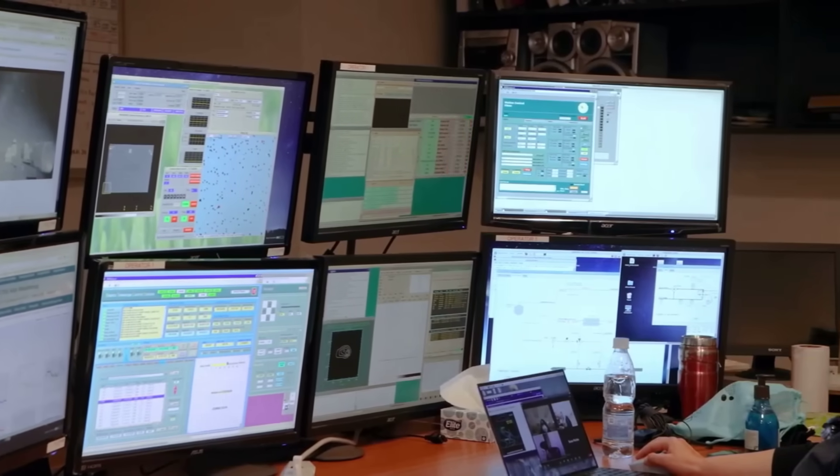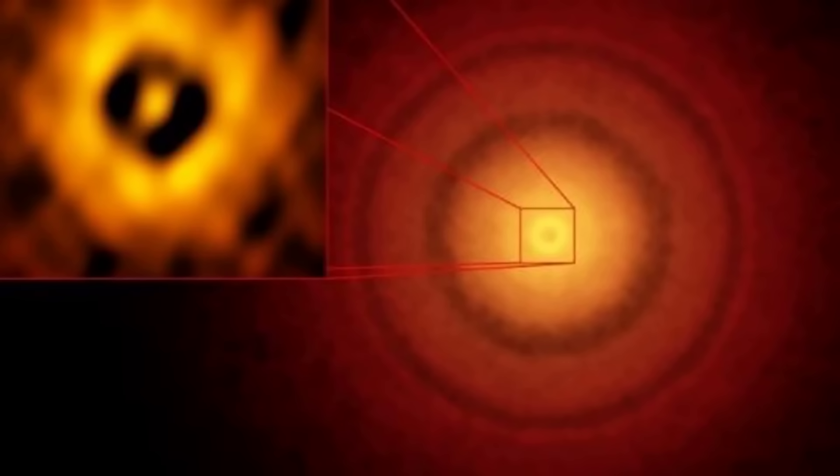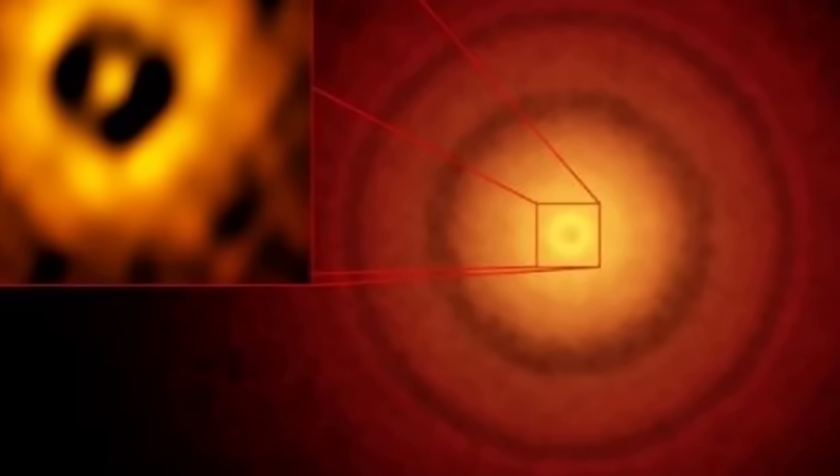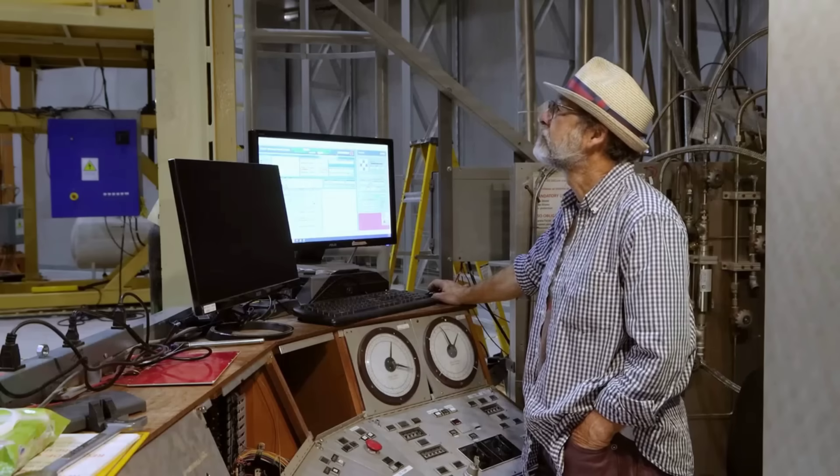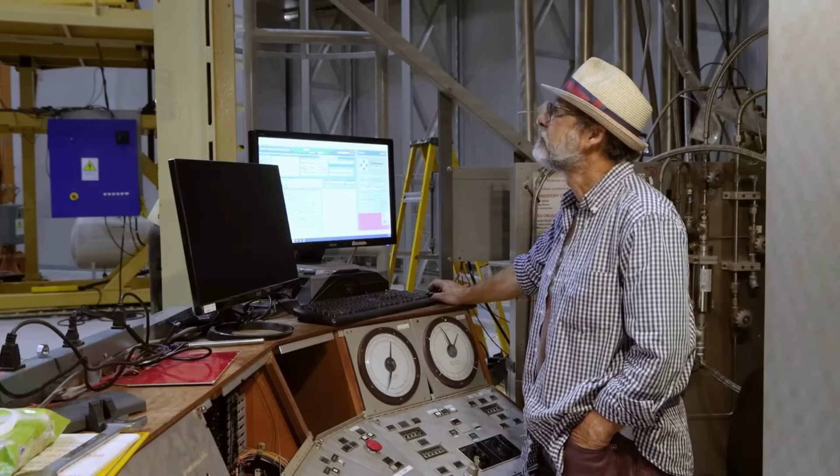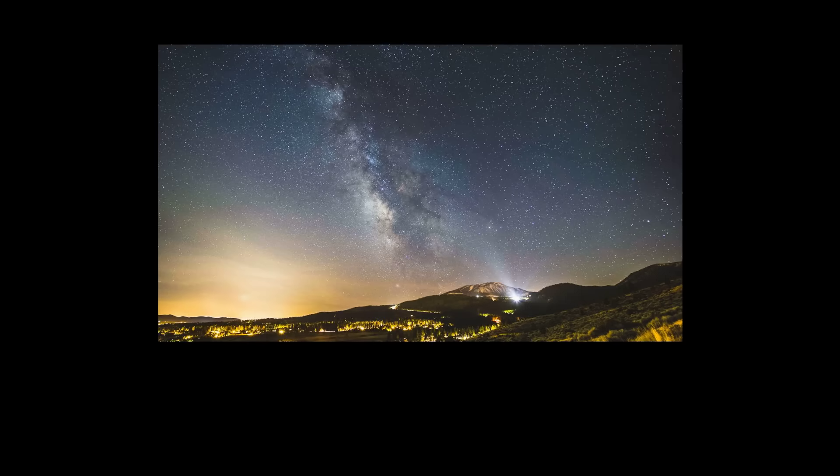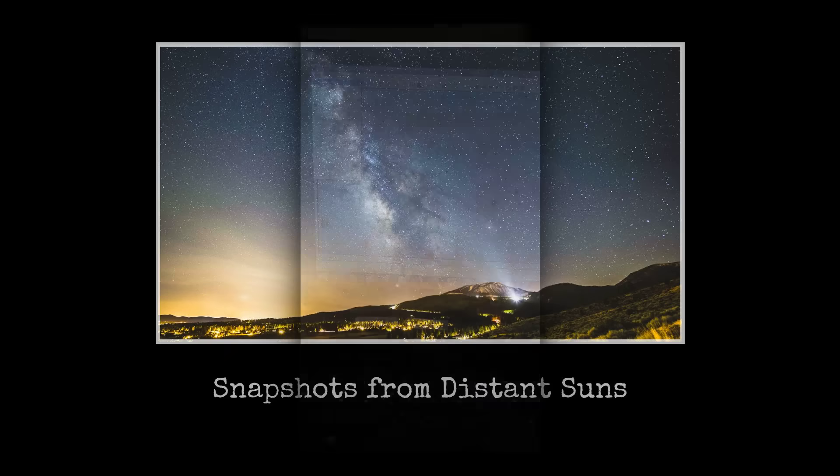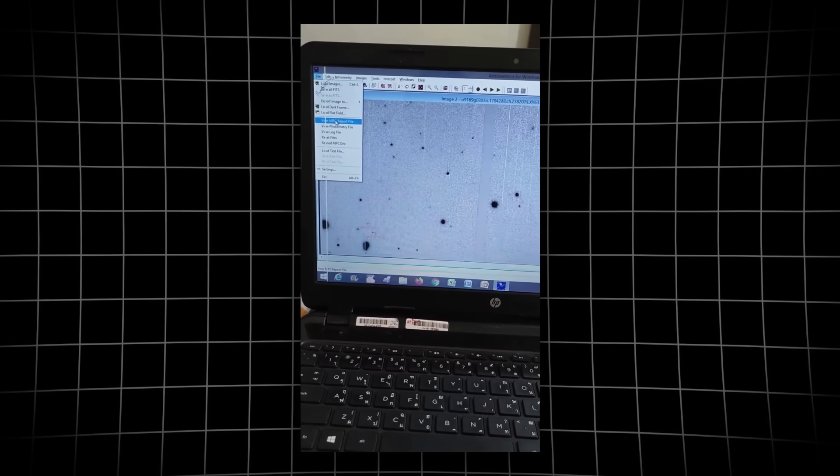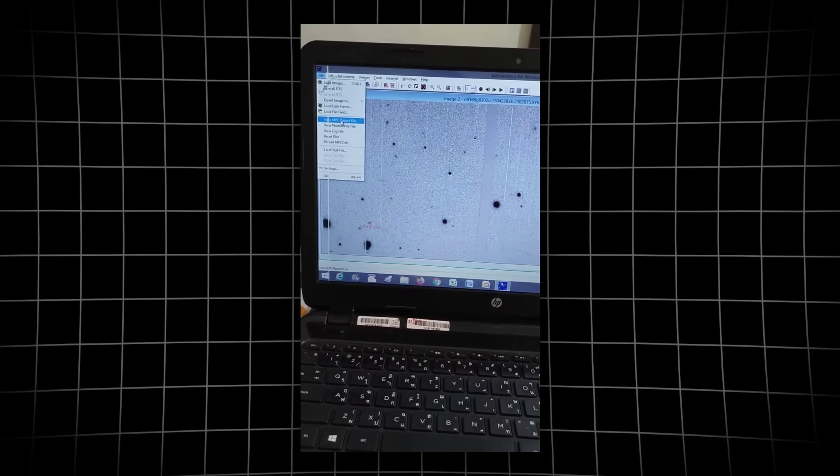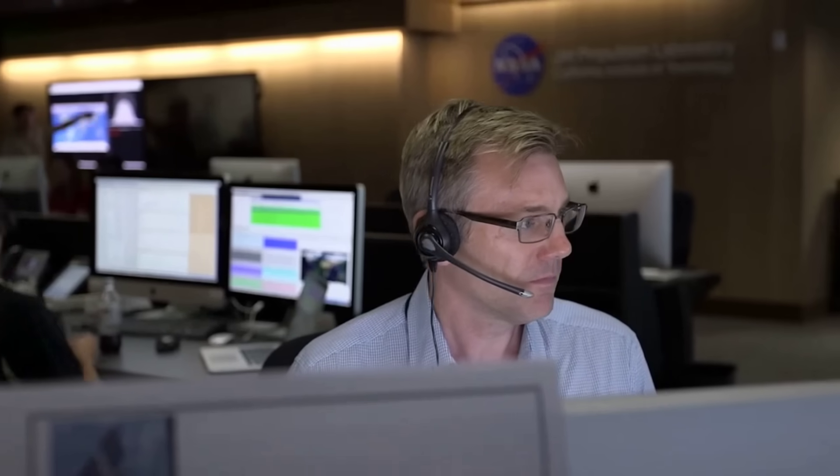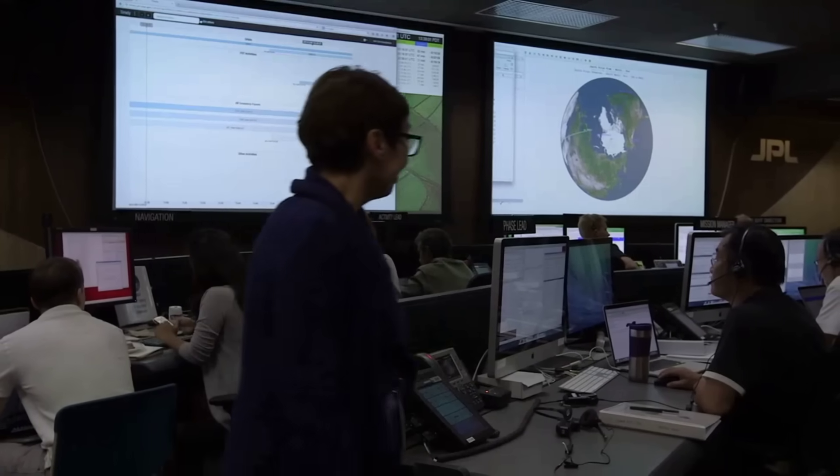This matters for understanding 3I/Atlas because it means this object formed around a different star in a different stellar environment, possibly billions of years ago. The composition, structure, and behavior we observe are snapshots of conditions in another part of our galaxy. Every measurement we take is a window into alien chemistry and physics, not alien life, but alien in the sense of foreign to our solar system.